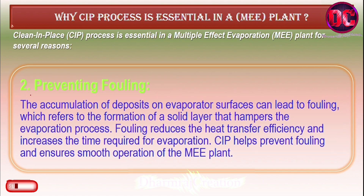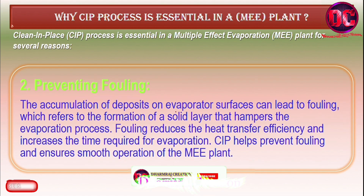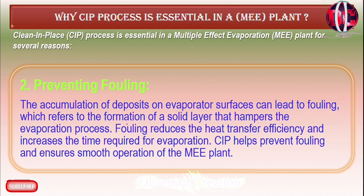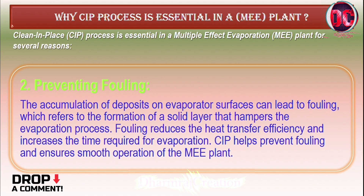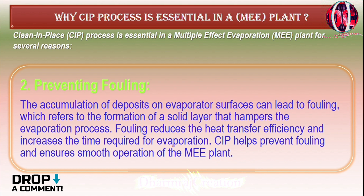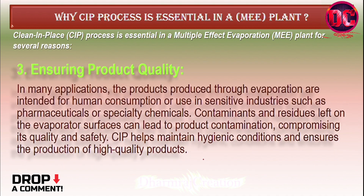Second, preventing fouling: the accumulation of deposits on evaporator surfaces can lead to fouling, which refers to the formation of a solid layer that hampers the evaporation process. Fouling reduces the heat transfer efficiency and increases the time required for evaporation. CIP helps prevent fouling and ensures smooth operation of the ME plant.